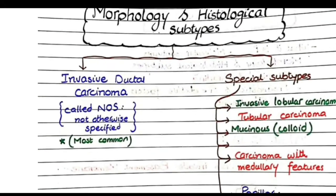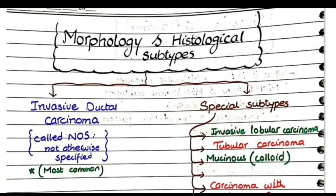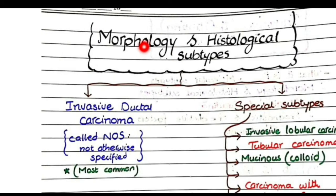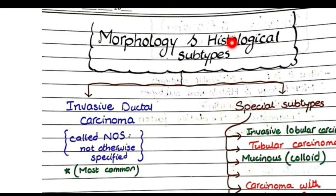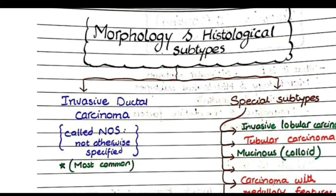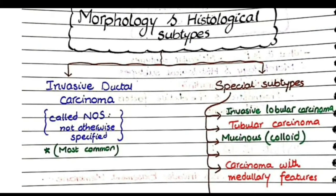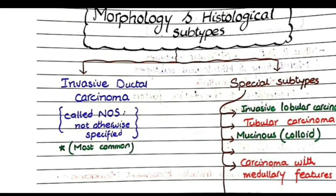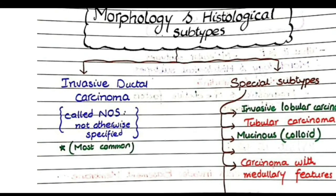The most important topic of concern is morphology and histological subtypes. Invasive breast carcinomas are divided into two categories: invasive ductal carcinoma and special subtypes.